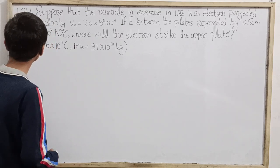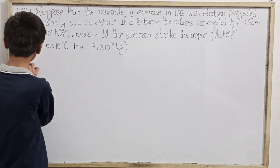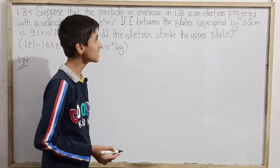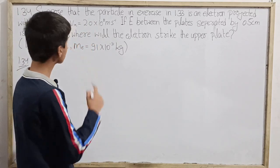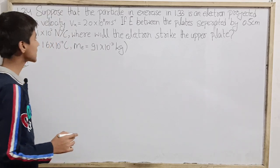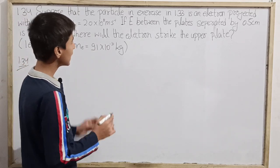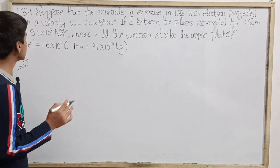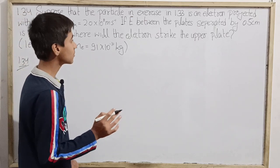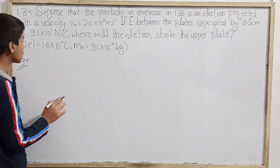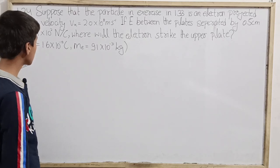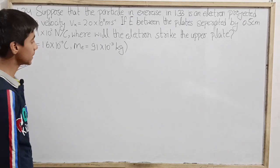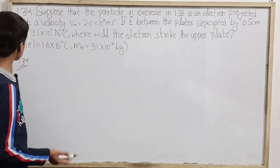Let's look at our question, that is 1.34. Suppose that the particle in Exercise 1.33 is an electron projected with a velocity vx equals 2.0 times 10^8 meter per second. If E between the plates separated by 0.5 centimeter is 9.1 times 10^2 newton per coulomb, where will the electron strike the upper plate? Magnitude of electronic charge given is 1.6 times 10^-19 coulomb, mass of electron 9.1 times 10^-31 kilograms. This is our question.